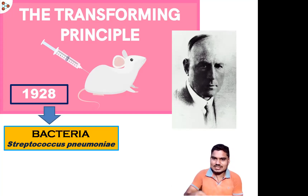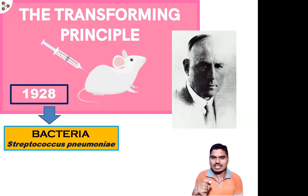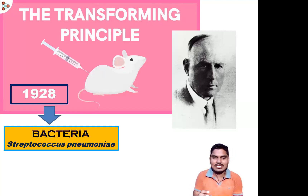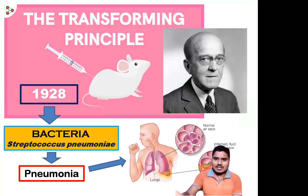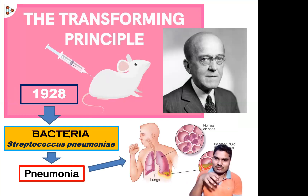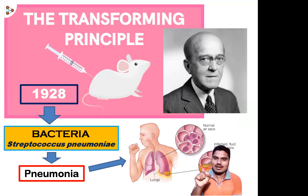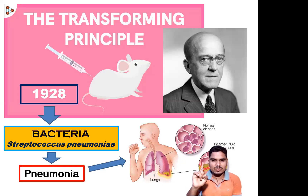At that time, Frederick Griffith tried to find a vaccine for Streptococcus pneumoniae. Streptococcus pneumoniae is one kind of bacteria responsible for causing the disease called pneumonia. Pneumonia is a disease that mainly affects the lungs of human beings. Just as nowadays the coronavirus infects our lungs, pneumonia is a disorder that mainly affects the lungs caused by the bacteria Streptococcus pneumoniae.